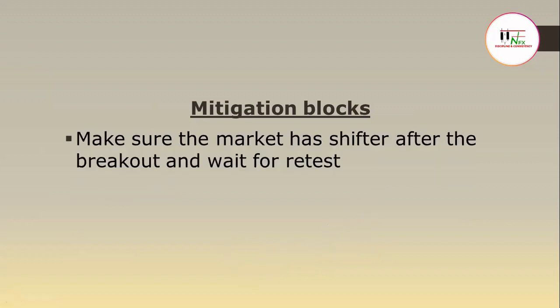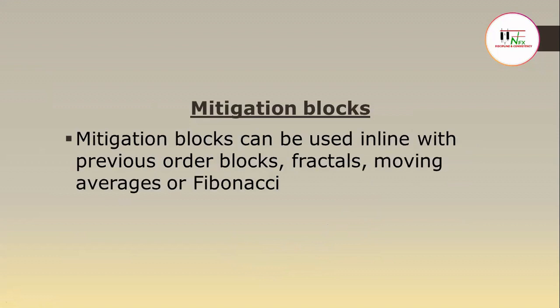You always have to make sure that the price has shifted from the area of break and wait for the retest. Avoid the very small breakout — the breakout that you're not sure about. The real breakout will have a big range. Mitigation blocks can be used in line with previous order blocks, fractals, moving averages, or Fibonacci. You have to look at other indicators as well to confirm it's a good area of entry. Most of the time, a mitigation block on low time frames like the 15-minute chart will give you the bounce off the 50 moving average.